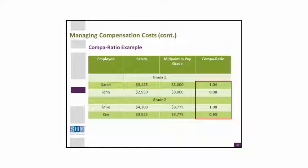Sarah's salary is $3,125 and the midpoint for her pay grade is $3,000, so she's being paid 4% above the midpoint. Then you see John is less, Mike is a little more, and Kim is a little less. Just looking at it in perspective — if they're all in the same job — it tells you we have one female who's paid less and one female who's paid more.